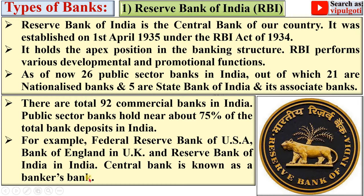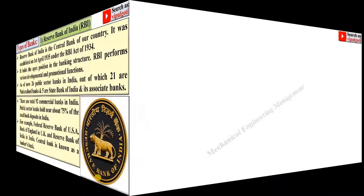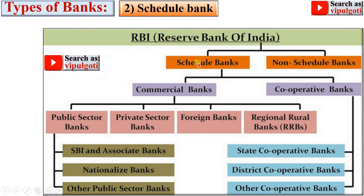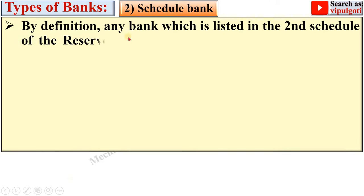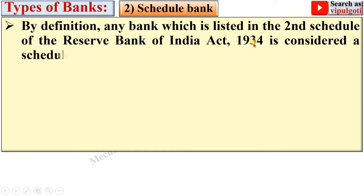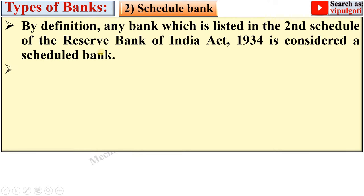The central bank is also known as the Banker's Bank. Now let's see the second type: Scheduled Banks. By definition, any bank which is listed in the second schedule of the Reserve Bank of India Act 1934 is considered a Scheduled Bank.